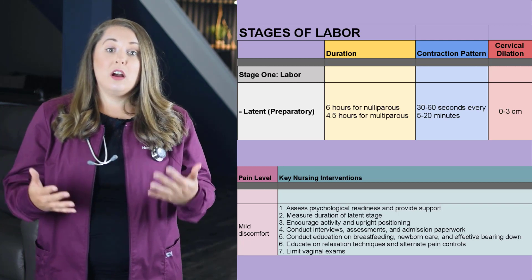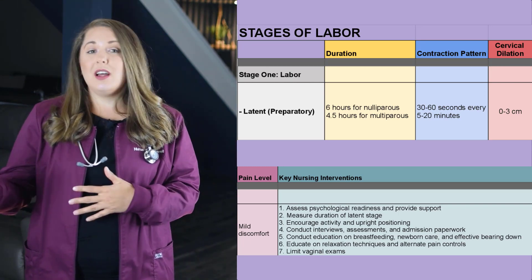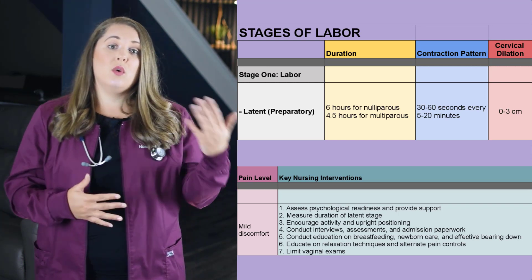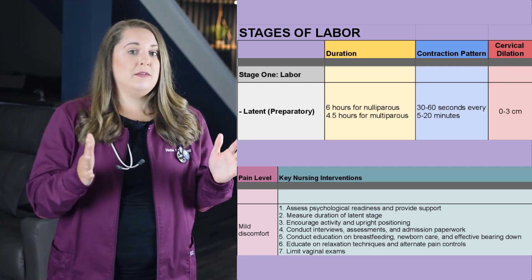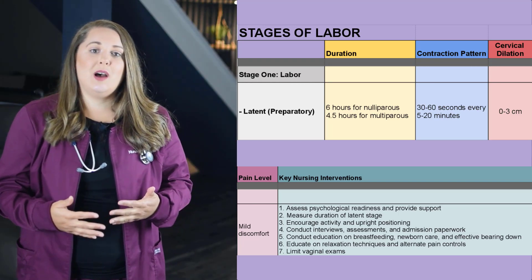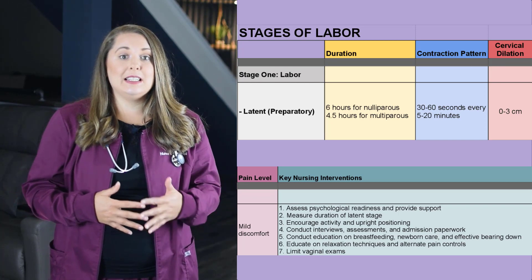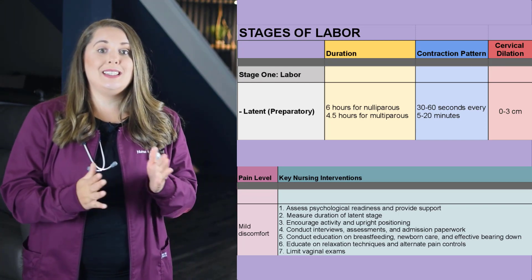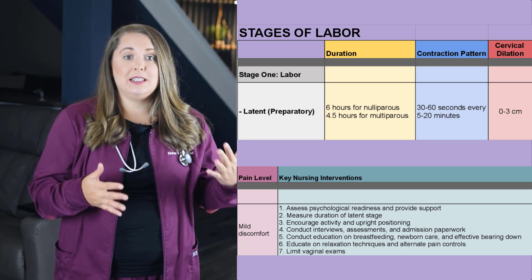For nulliparas — first-time moms — the latent phase should not be more than six hours. For multiparas, or moms who have given birth before, it should be within the 4.5-hour range. One of the most common causes of a prolonged latent phase is cephalopelvic disproportion, or CPD for short, which actually requires a cesarean birth. This basically means that the baby's head or body is too big to fit through the mom's birth canal.